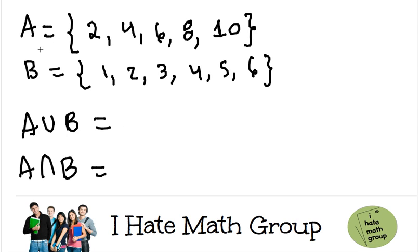So look how easy this is going to be. Let's say that you have set A, which is 2, 4, 6, 8, and 10. And then you have B, which is going to be 1, 2, 3, 4, 5, 6.